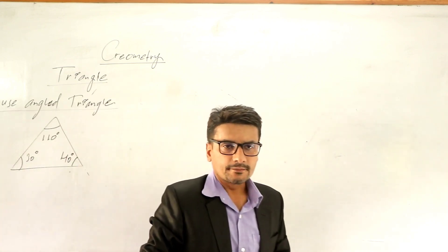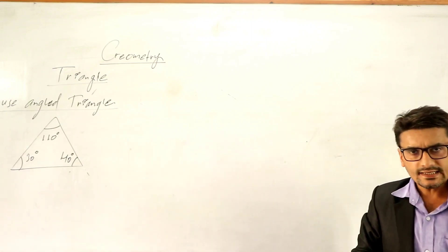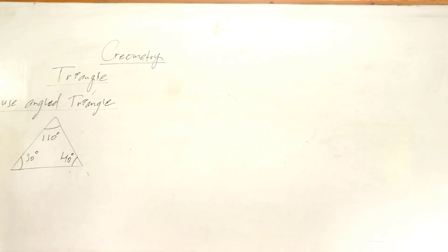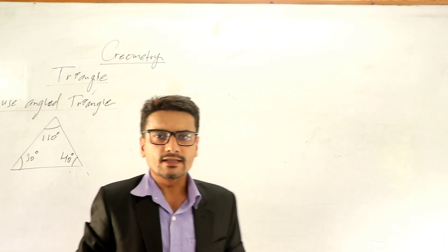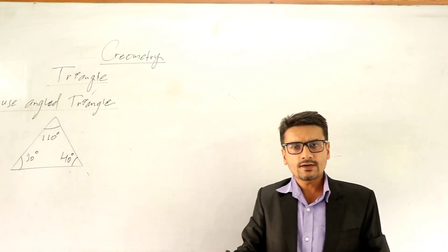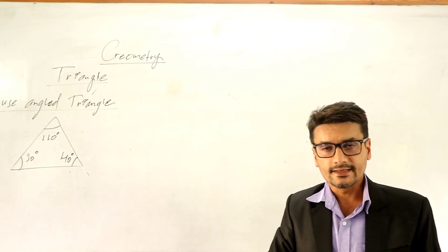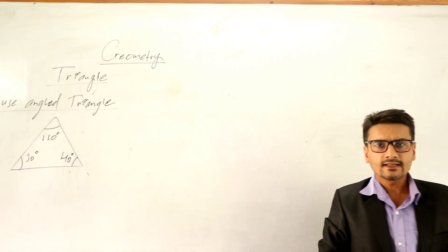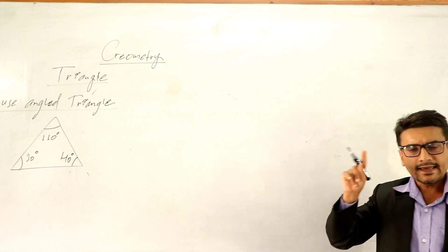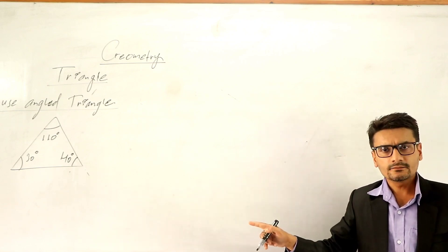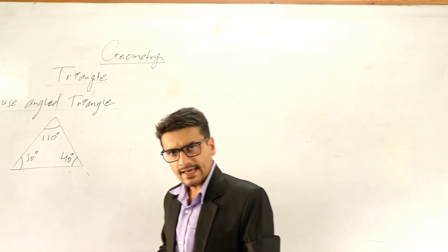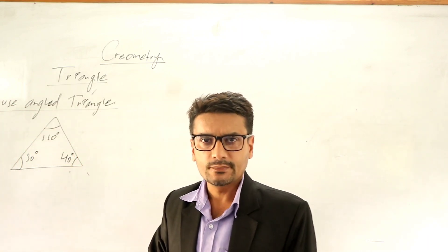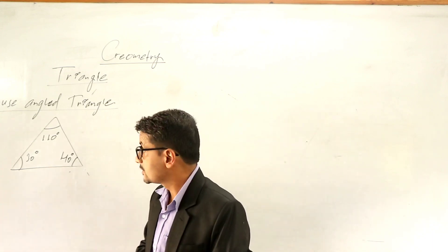So once again: a plane figure bounded by three line segments is called a triangle. If all sides are equal, that is equilateral. If any two sides are equal, that is an isosceles triangle. That classification is on the basis of the sides. But on the basis of angles, a triangle can also be classified into three parts: right angle triangle, acute angle triangle, and obtuse angle triangle.